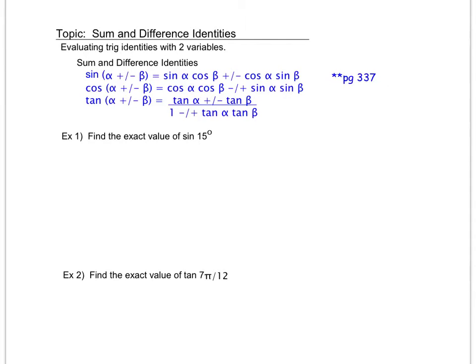In this video we're going to look at six new identities. I've written them in a condensed format, so I've written the sine, cosine, and tangent as both the plus and minus.